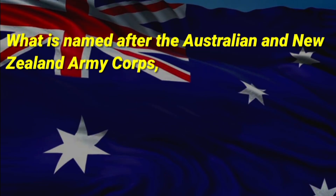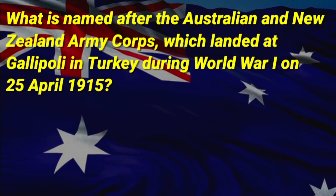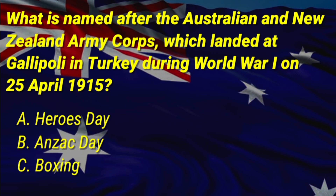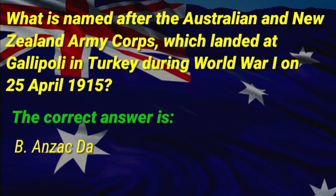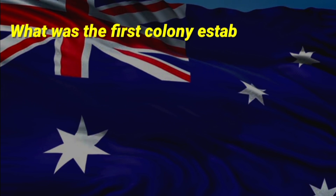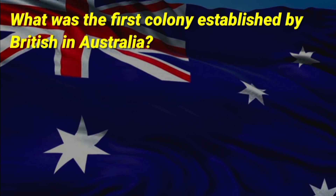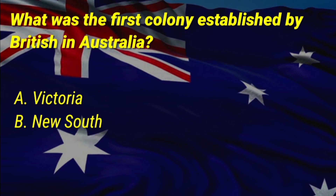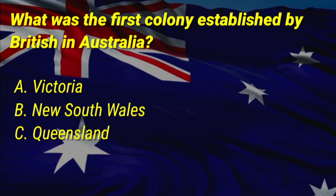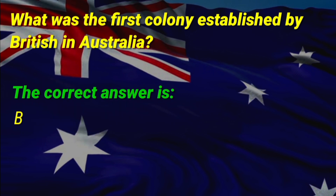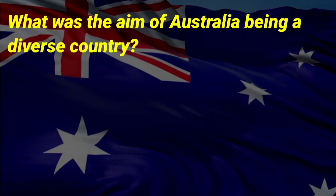What is named after the Australian and New Zealand Army Corps, which landed at Gallipoli in Turkey during World War One on 25th April 1915? A: Heroes Day, B: ANZAC Day, C: Boxing Day. The correct answer is B, ANZAC Day. What was the first colony established by the British in Australia? The correct answer is B, New South Wales.